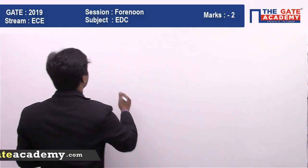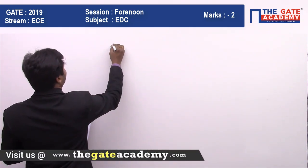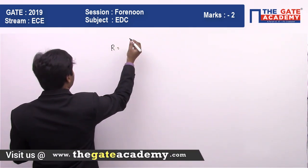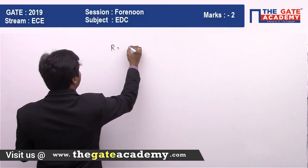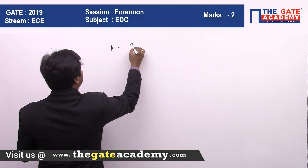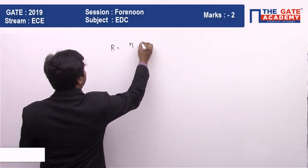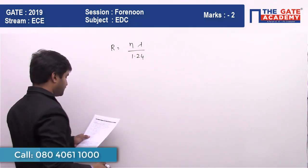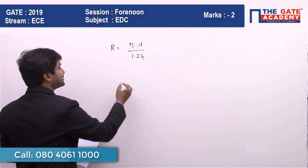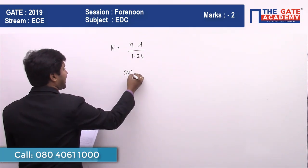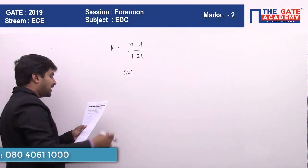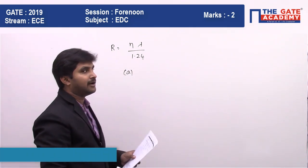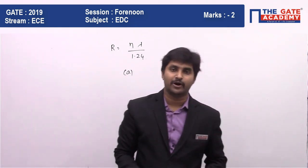It's a very straightforward formula. The responsivity of a photodetector diode is given by eta multiplied by lambda divided by 1.24. So the answer for this question is Option A, which is R = eta multiplied by lambda divided by 1.24.